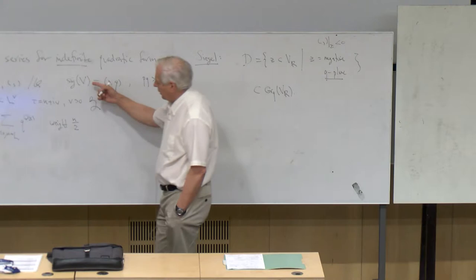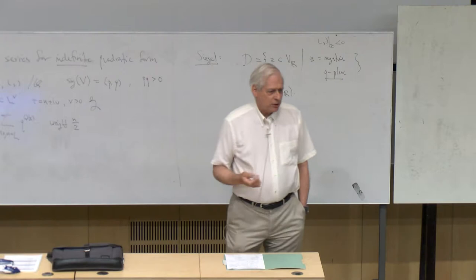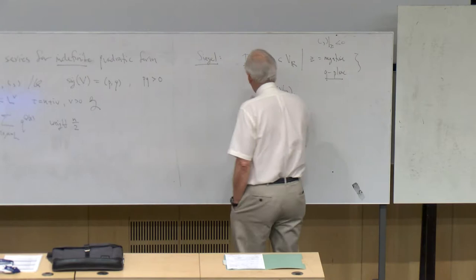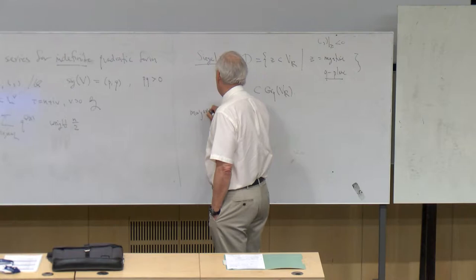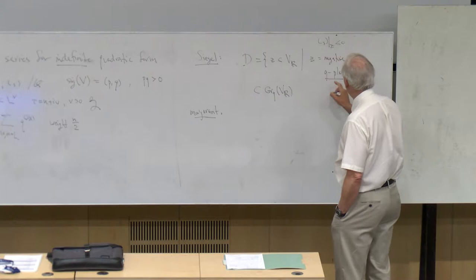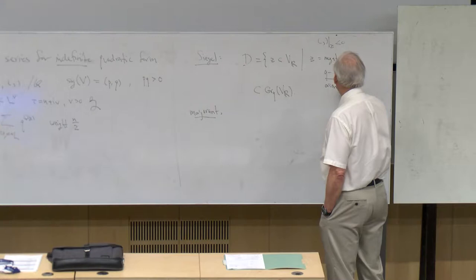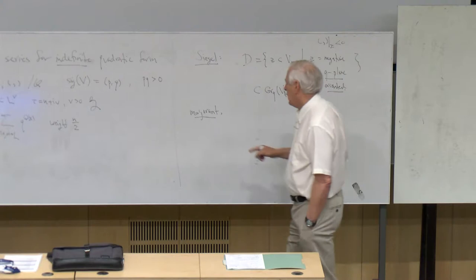The problem with convergence in the case of an indefinite quadratic form is that usually there are infinitely many lattice vectors of any given length, and there are ones of negative length, giving negative powers — everything goes wrong. Siegel's idea was to fix the quadratic form by introducing what he called a majorant. Later in the talk you'll see it's important to take oriented negative Q-planes, so D is the oriented negative Q-planes.